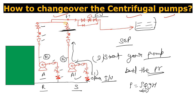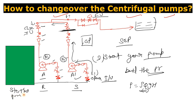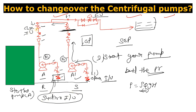Once the discharge pressure builds up, slowly open the discharge IV of the standby pump so the solution flows through. When the operating pressure is achieved and conditions are normal, close the discharge IV of the previously running pump, then stop that pump from the LCS, and finally close its suction IV.